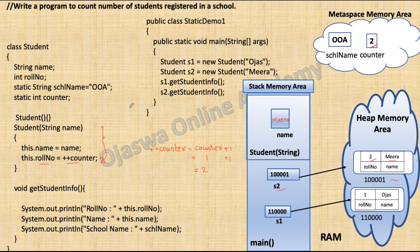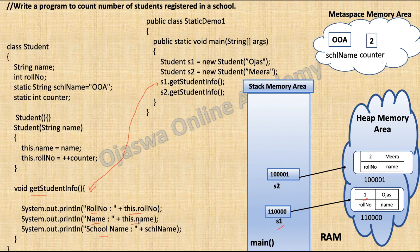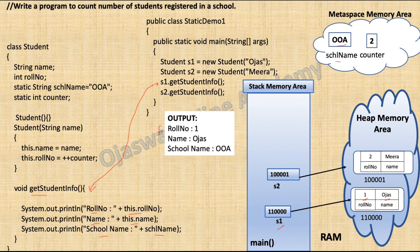Once the execution of the constructor is over, memory reserved for its local variable is released and control goes back. The next statement calls s1.getStudentInfo. GetStudentInfo is a non-static method, so we need to call it using an object. The interpreter reads the method call and control goes to the method definition. SOP prints role number, name, and school name to the console. 'this.roleNumber' retrieves the role number of object s1, 'this.name' retrieves the name of object s1, and school name — being a static variable — retrieves the value 'Double A' assigned to it.